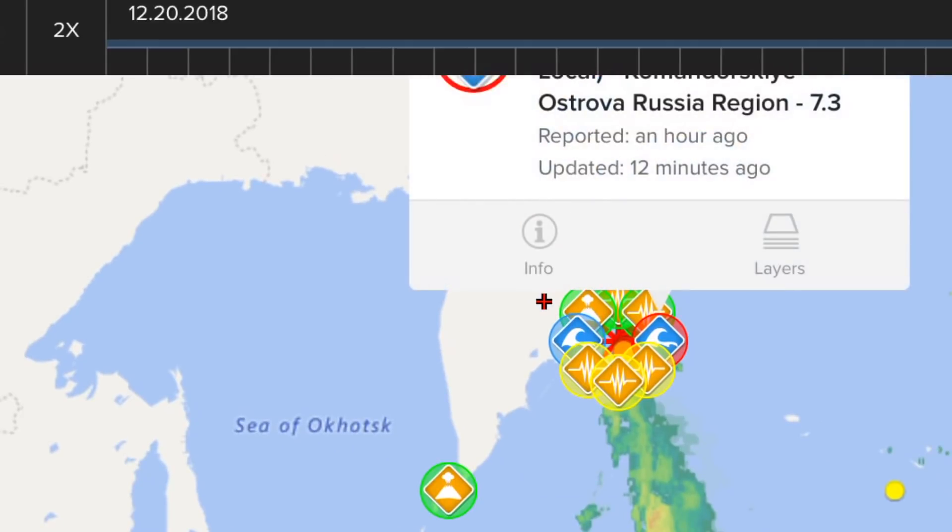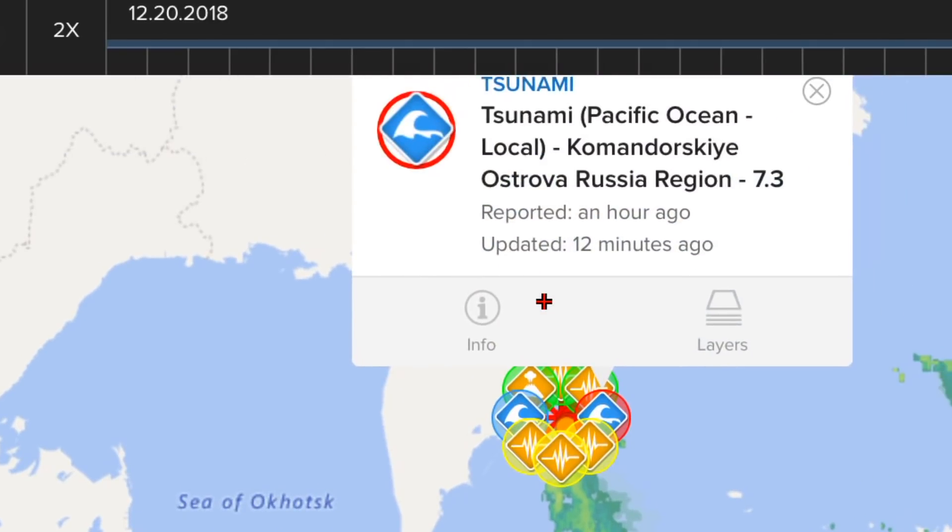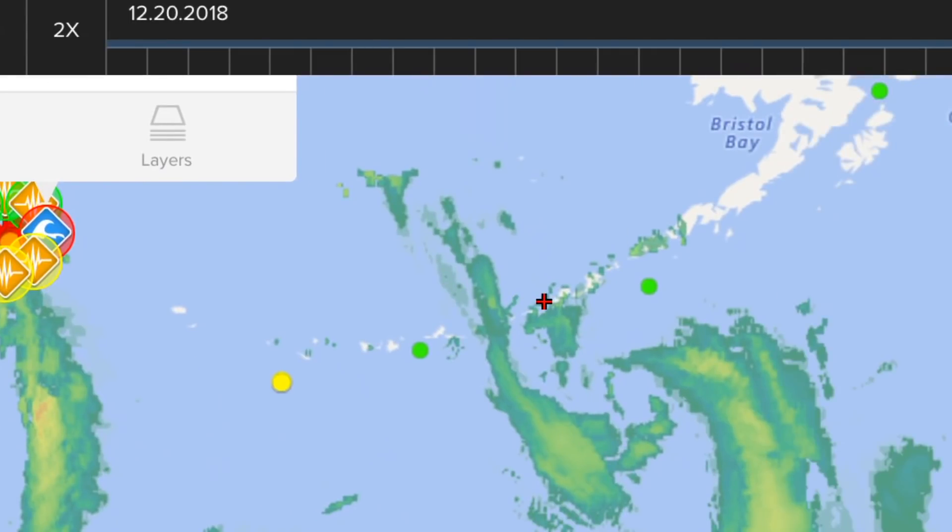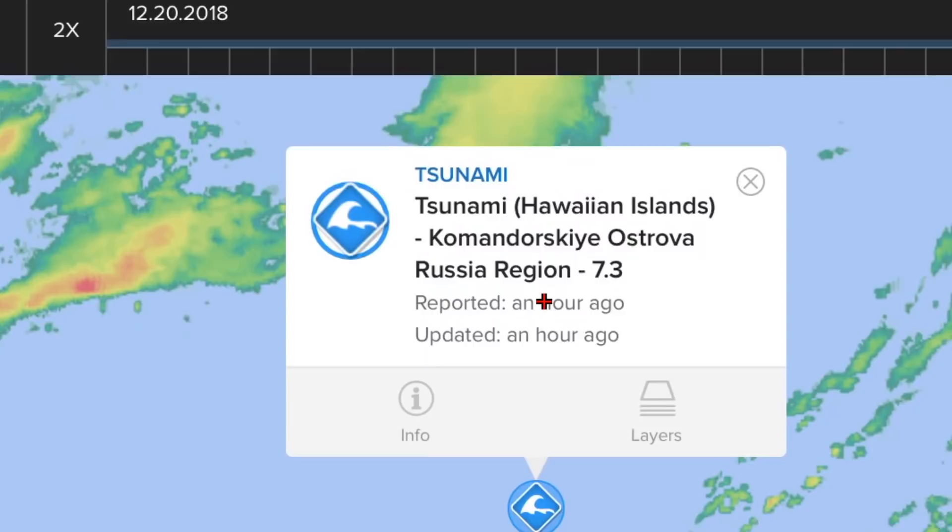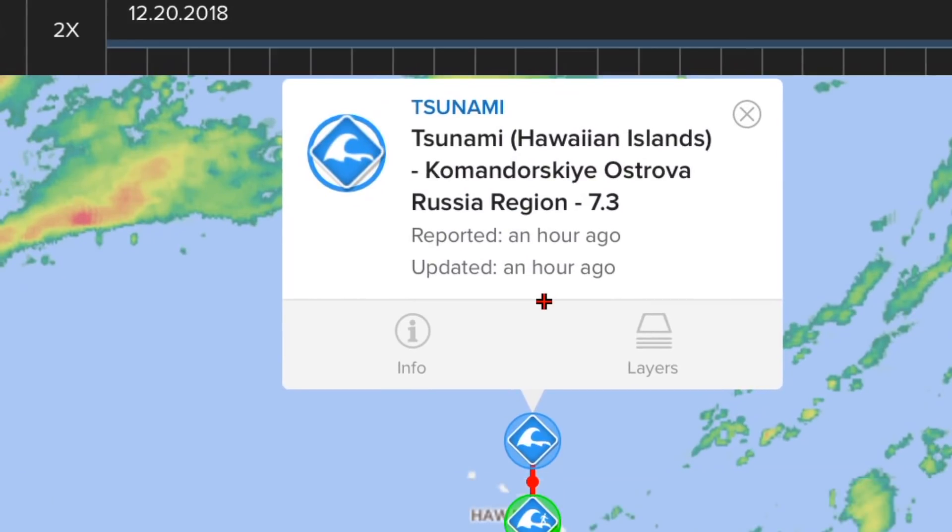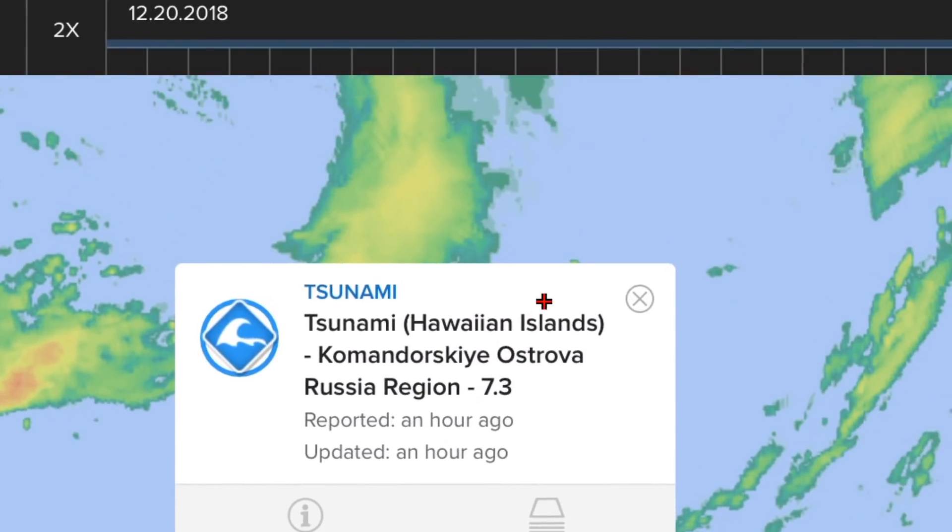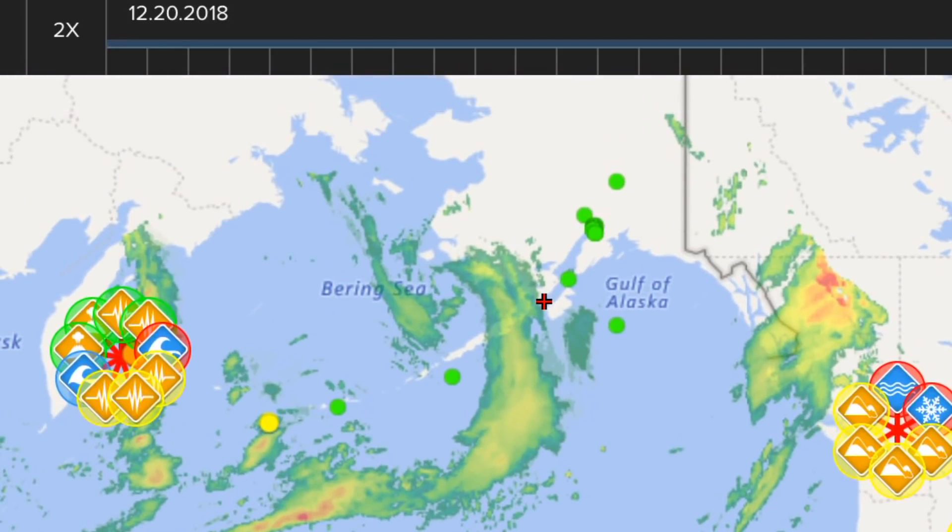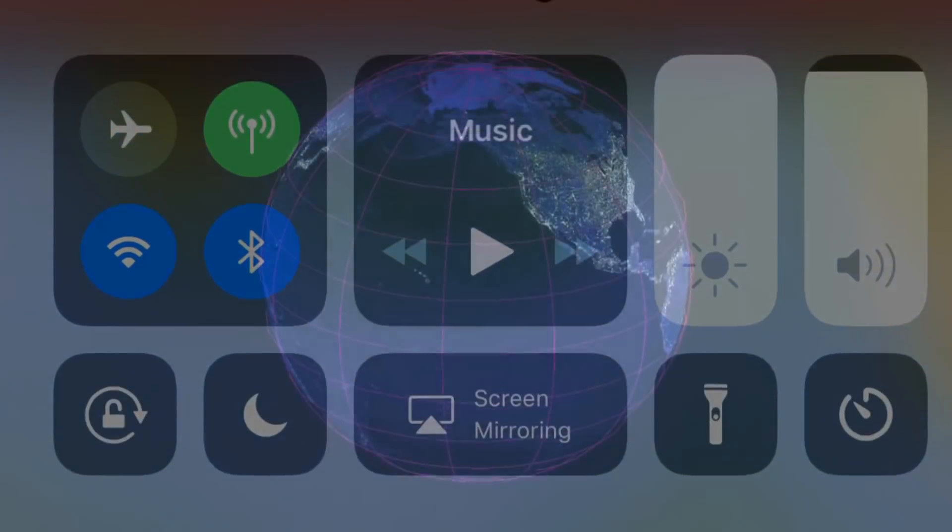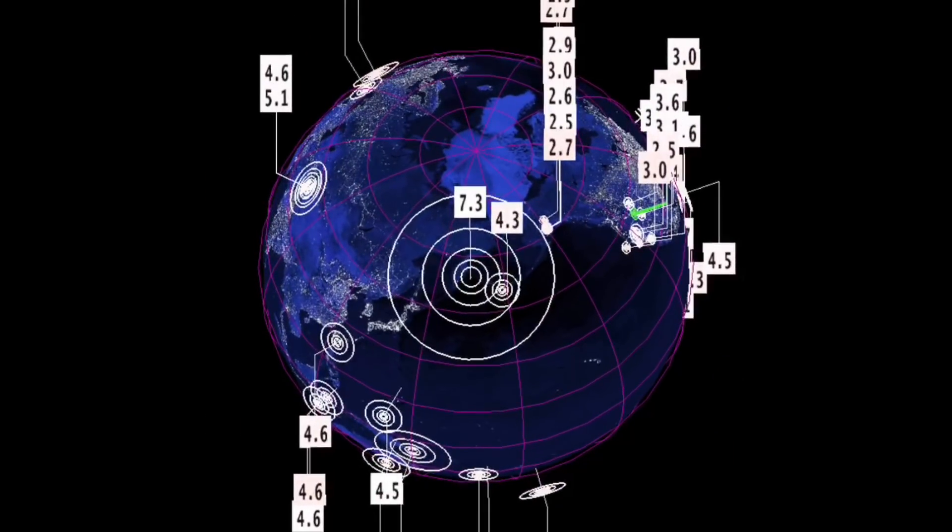Very active volcanoes on the island just west of this large earthquake, and we can see already tsunami warnings being issued for Russia and Hawaii for a large 7.3. There are many aftershocks going off right now as we speak, still getting updated.